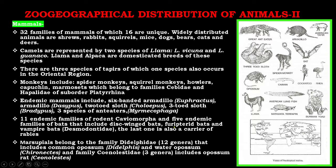The vampire bat is also a carrier of rabies. Marsupials belong to the family Didelphidae, having 12 genera that include the common opossum Didelphis and water opossum Chironectes. Family Caenolestidae has three genera that include the opossum rat Caenolestes.